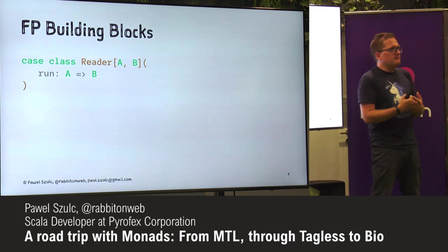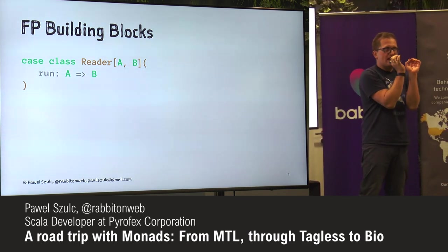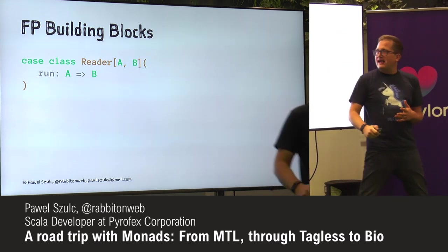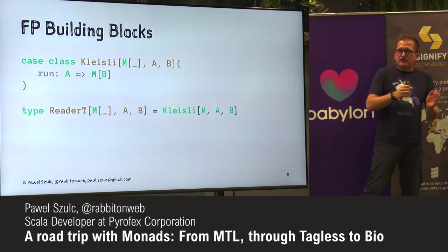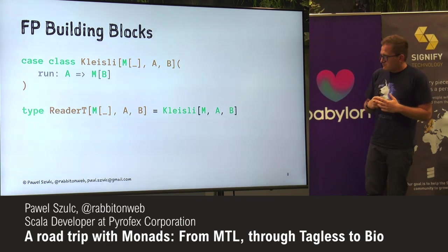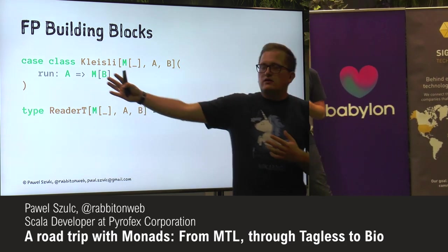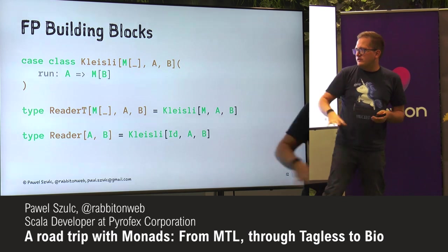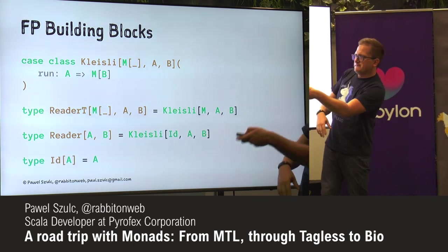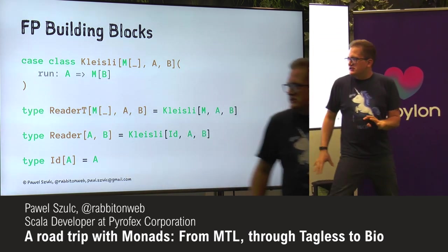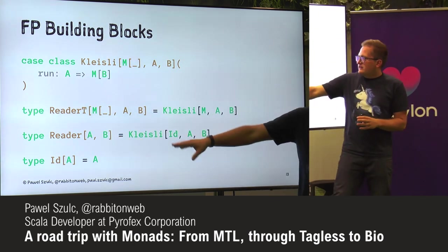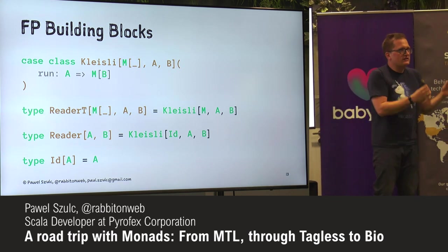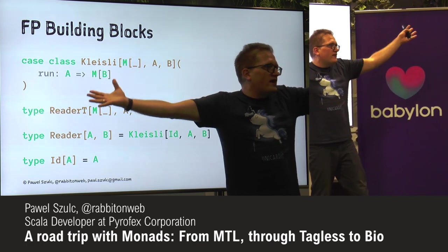Same goes for Reader. If you see it for the first time you might be confused, but it's not really complex — it's just a function that goes from A to B and it's wrapped, closed over some class. Kleisli, sometimes known as ReaderT, is basically the same thing — a specialization of Reader. It's just a function from A to some B, but that B is closed over some M, some type constructor. You can define Reader as a Kleisli of ID, where ID of A is just a name.